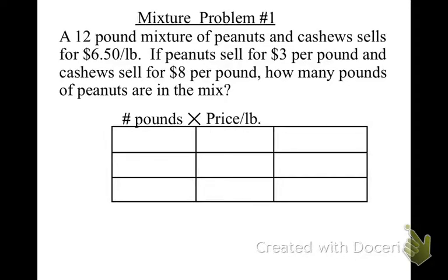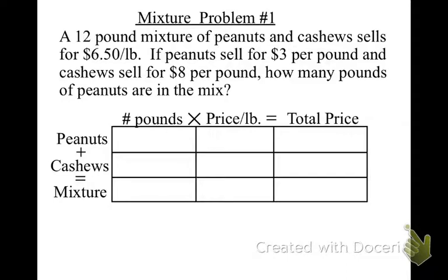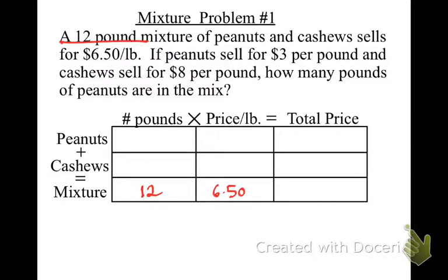I'm trying to give you a generic that you can always use. What can I place in my boxes? Where does the 12-pound mixture go? Yes, the bottom of the first column is going to be my 12. And what about that $6.50? That's kind of new — but do you know where to place it? It goes in the middle column, at the bottom, because this is the first time we've had an actual price for our mixture.